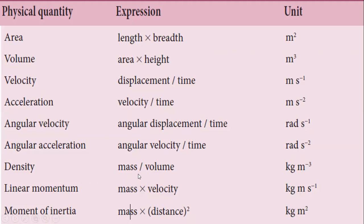Density is mass by volume. Mass is kilogram and volume is meter cubed, so the unit is kilogram per meter cubed. Linear momentum is mass into velocity. Mass is kilogram and velocity is meter per second, so the unit is kilogram meter per second.